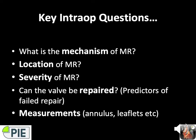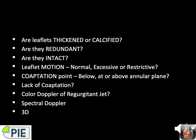Key intra-operative assessment questions include: How severe is the MR? Can the valve be repaired, and what measurement acquisition can we do such as annulus and leaflet size? Are the leaflets thickened or calcified, redundant, or intact? What is the leaflet motion — normal, excessive, or restrictive? What about the coaptation point — below, at, or above the annular plane? Is there a lack of coaptation? What does the color Doppler jet look like, and what about spectral Doppler and 3D interpretation?